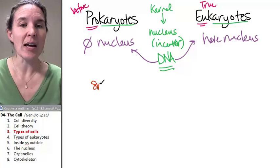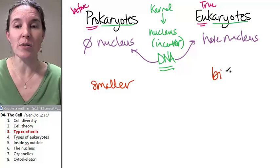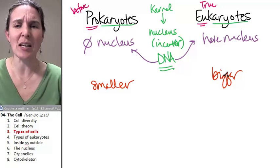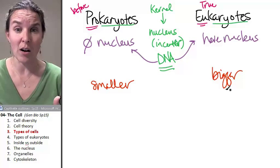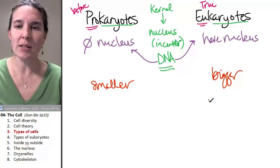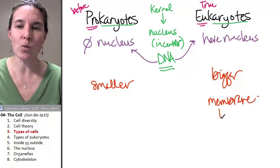But there are some other characteristics that we can look at. For example, prokaryotes tend to be much smaller than eukaryotes. And I think of this as being, you know, they've got a big old nucleus that they have to fit in there. And eukaryotes have membrane-bound organelles.